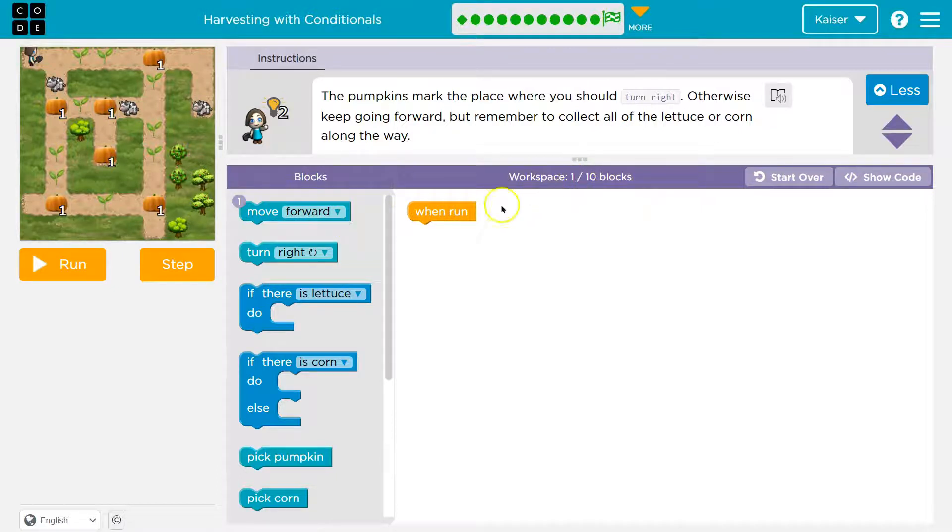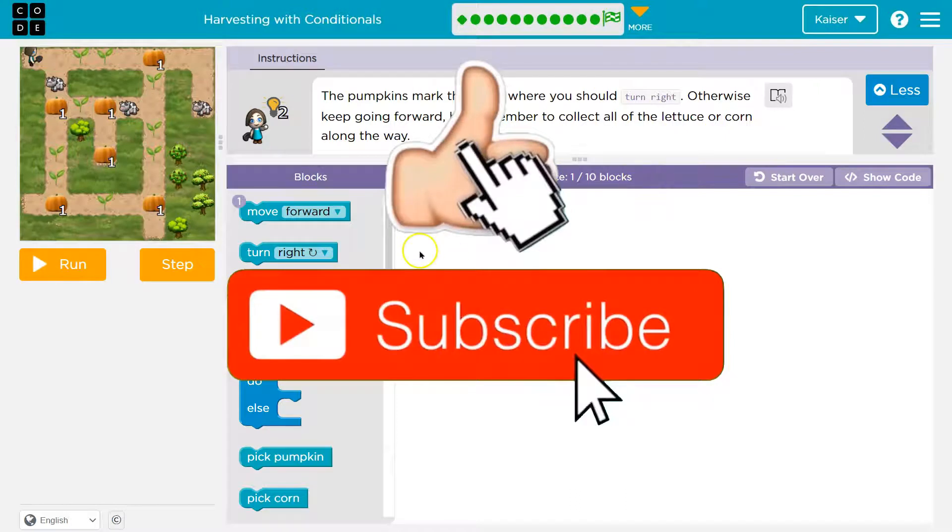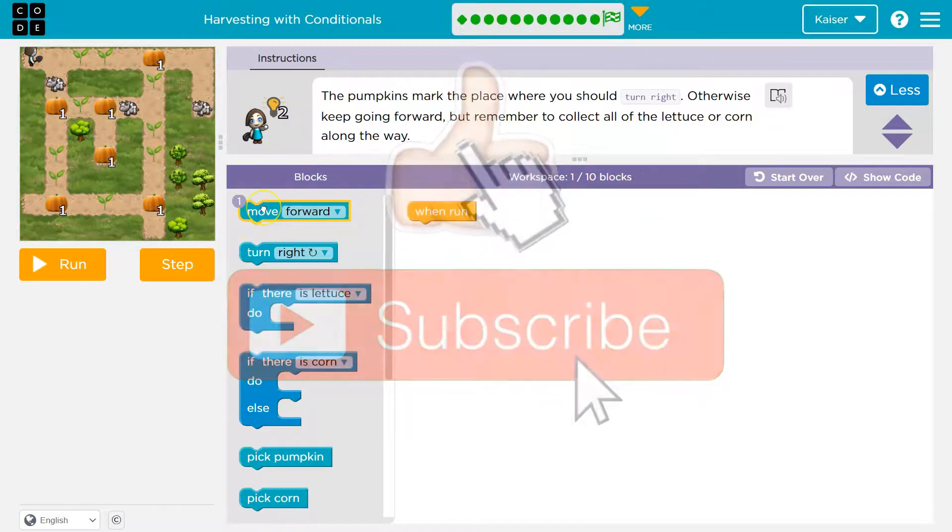Alright, so I have one block in my workspace. I need ten. The pumpkins mark the place where you should turn right. Otherwise, keep going forward. But remember to collect all the lettuce or corn along the way. Okay, so this is a bit different. Now, I should only use one move forward.